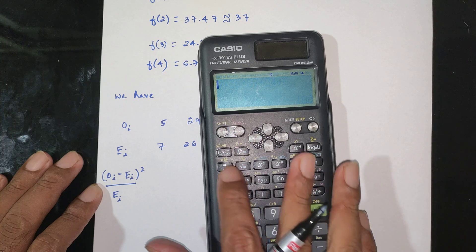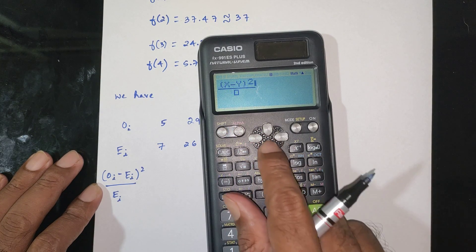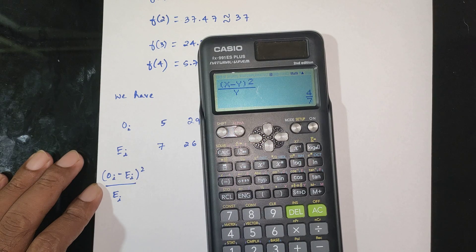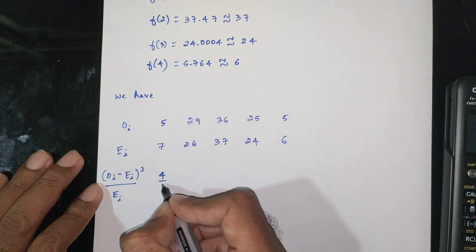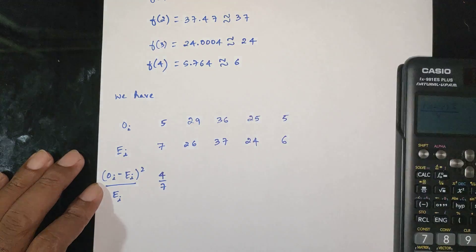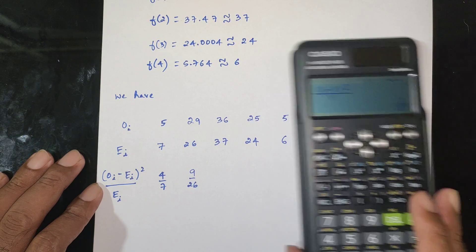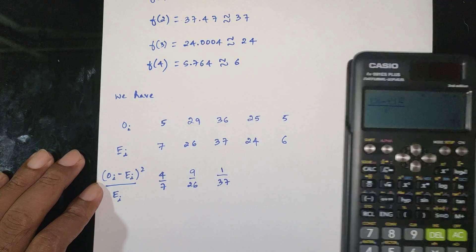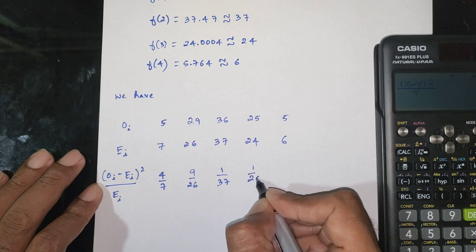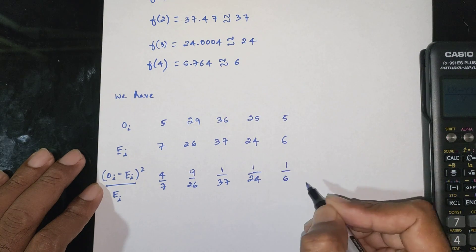Computing each term: For x=0: Oi=5, Ei=7 → (5−7)²/7 = 4/7. For x=1: Oi=29, Ei=26 → (29−26)²/26 = 9/26. For x=2: Oi=36, Ei=37 → (36−37)²/37 = 1/37. For x=3: Oi=25, Ei=24 → (25−24)²/24 = 1/24. For x=4: Oi=5, Ei=6 → (5−6)²/6 = 1/6.